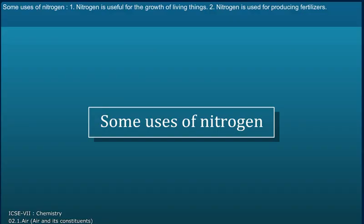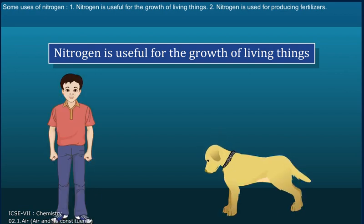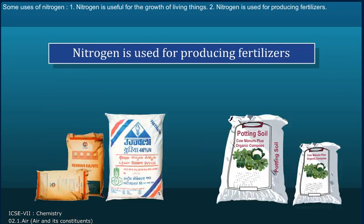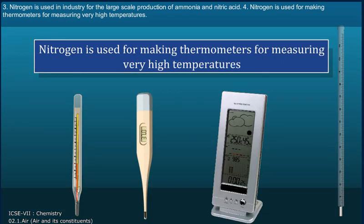Some uses of nitrogen: 1. Nitrogen is useful for the growth of living things. 2. Nitrogen is used for producing fertilizers. 3. Nitrogen is used in industry for the large-scale production of ammonia and nitric acid. 4. Nitrogen is used for making thermometers for measuring very high temperatures.